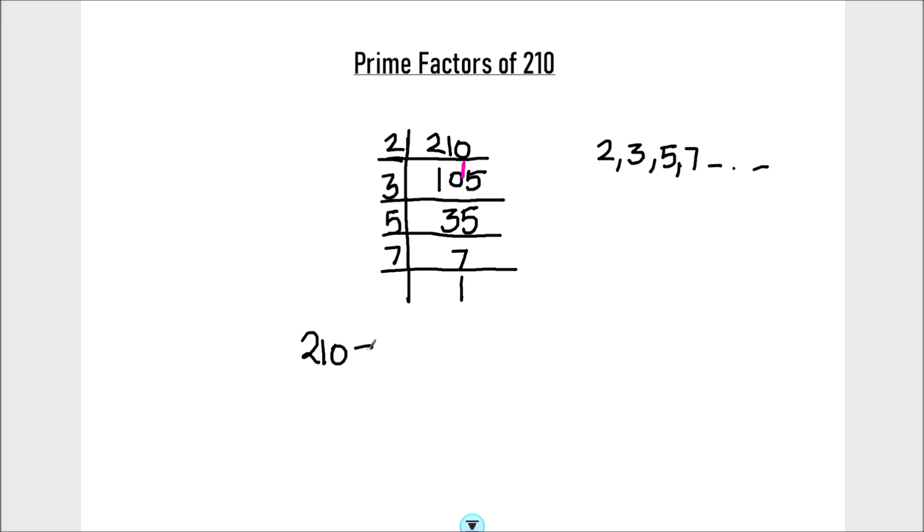So, the prime factors of 210 are all the numbers which are on the left hand side of the ladder which is 2 times 3 times 5 times 7. These are the prime factors of 210.